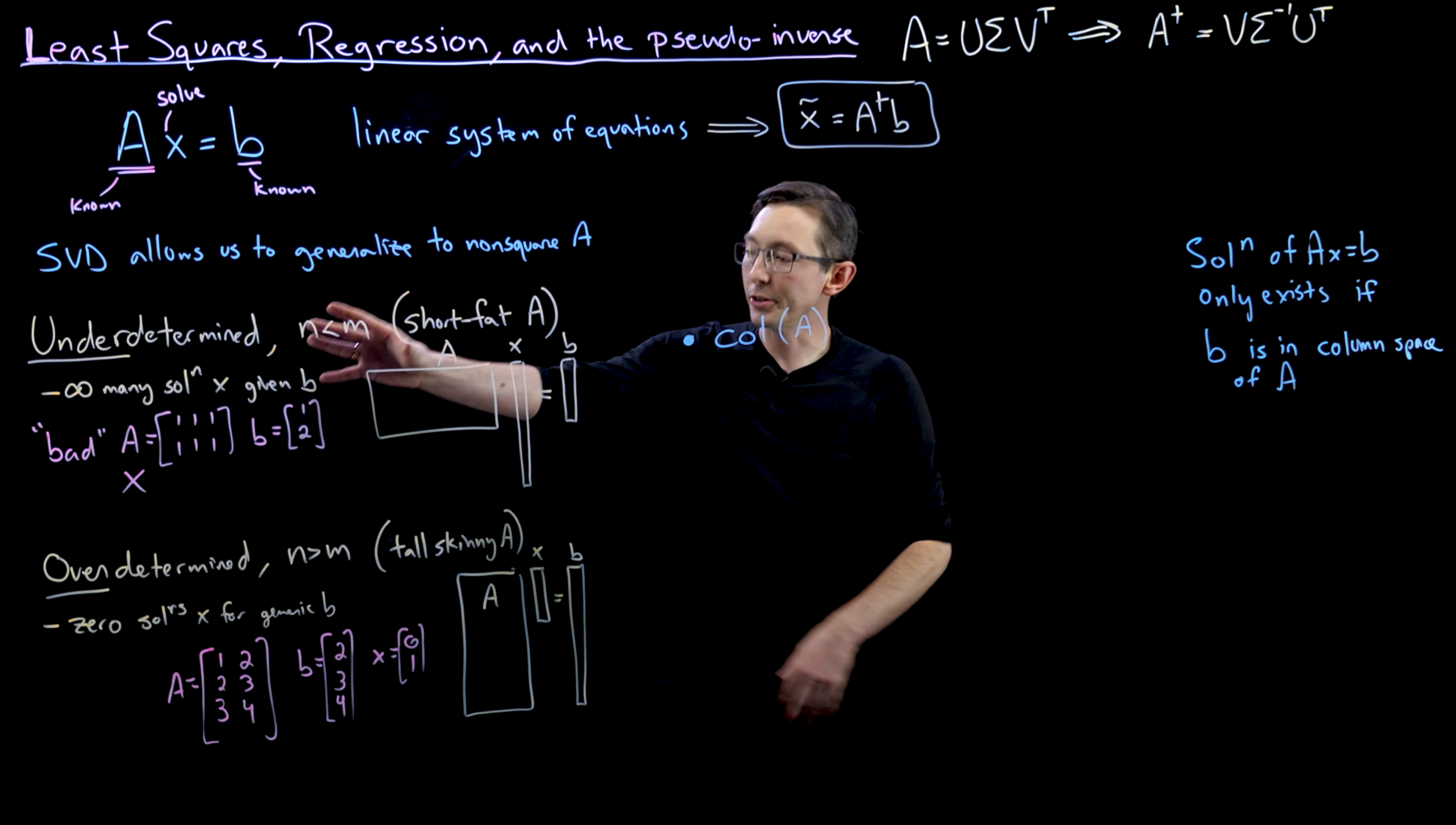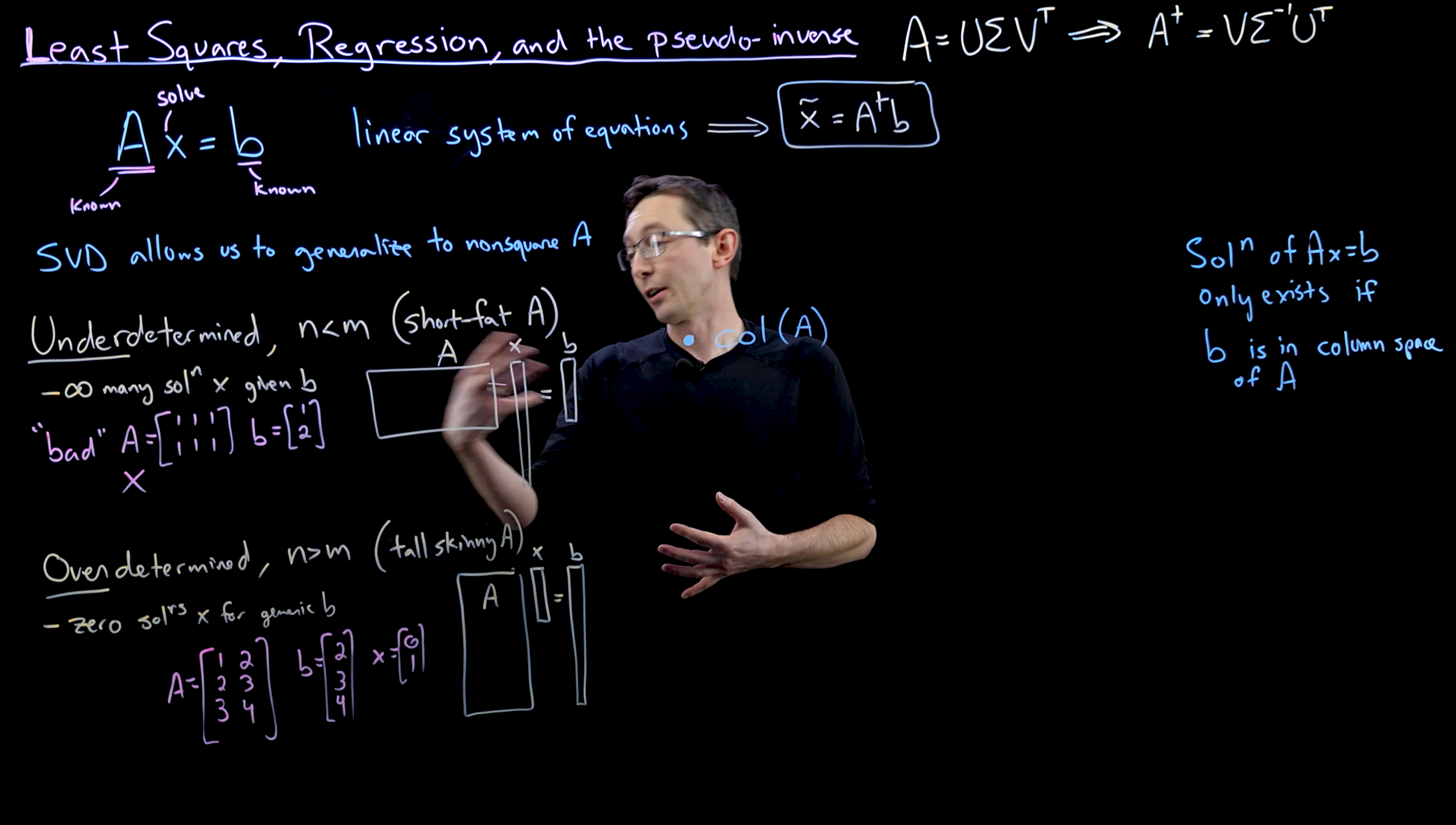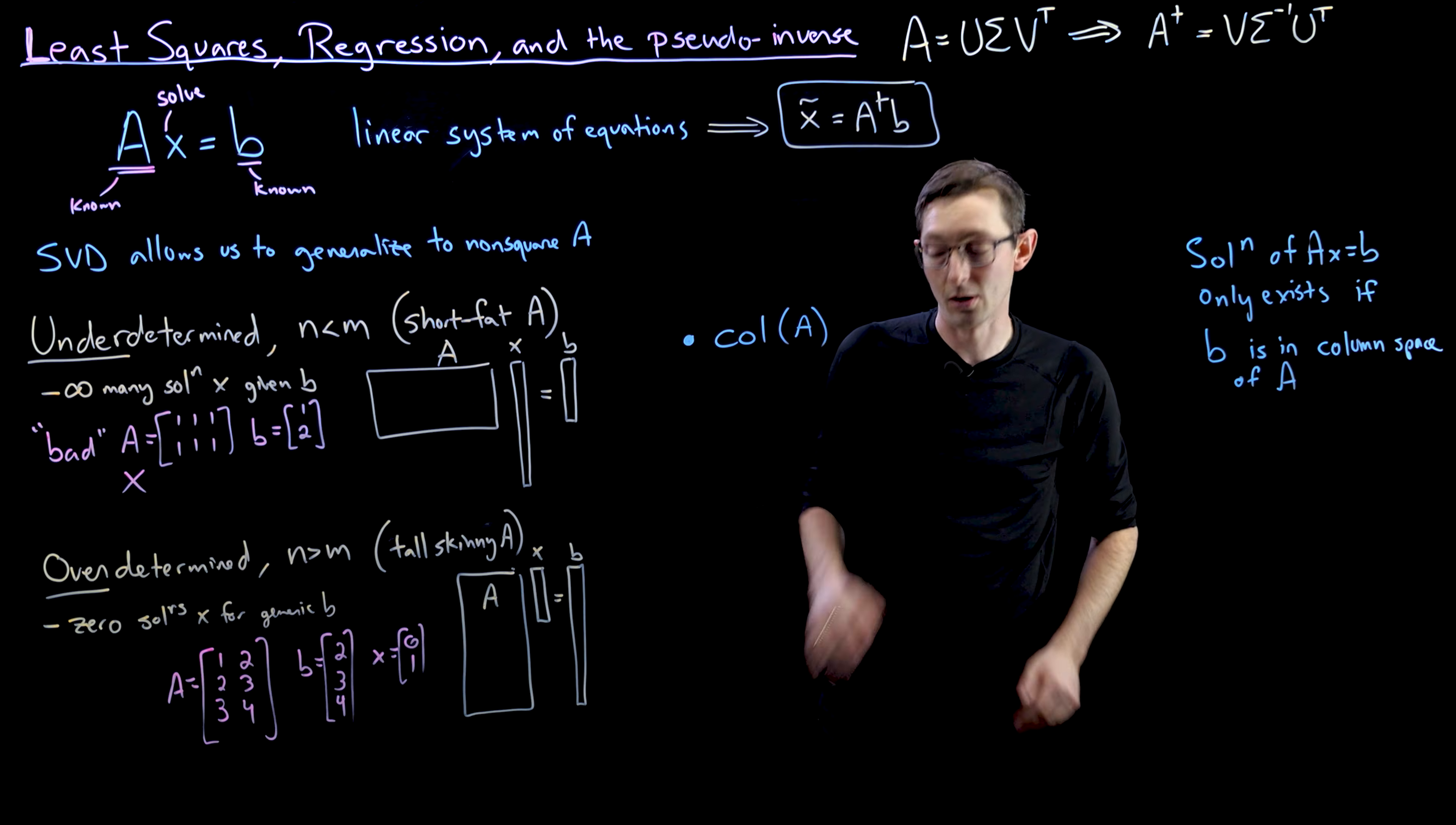So these statements about underdetermined and overdetermined systems are generally true, but there are certainly some column vectors B where there is a solution even for overdetermined systems. And there might be some underdetermined systems where there are B that don't have solutions. So both can exist, and it really depends on this column space of A. So that's really, really important is the column space of A.